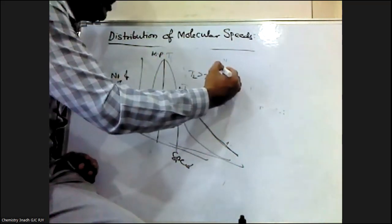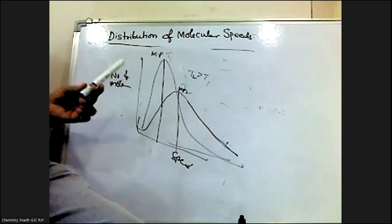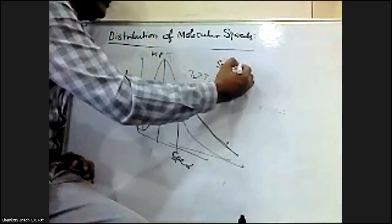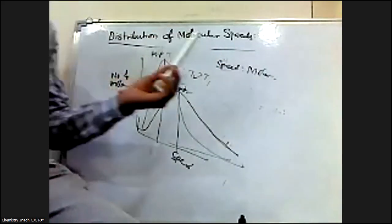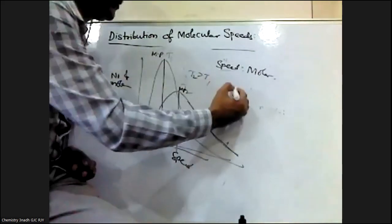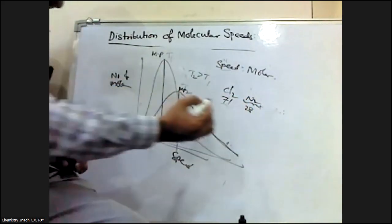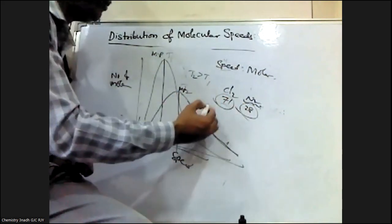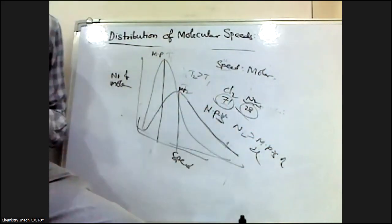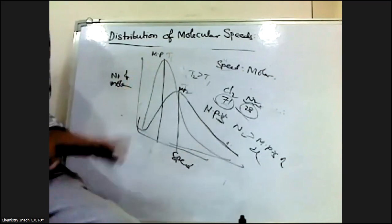Similarly, the speed distribution also shows that gas molecules with heavier molar mass have slower speed than lighter gas molecules. The speed depends on molar mass: gas molecules with lower molar masses have higher speeds than molecules with higher molar masses. For example, comparing chlorine and nitrogen — nitrogen has a molar mass of 28, whereas chlorine is 71. As nitrogen has a lesser molar mass than chlorine, the most probable speed of N2 is greater than the most probable speed of Cl2.